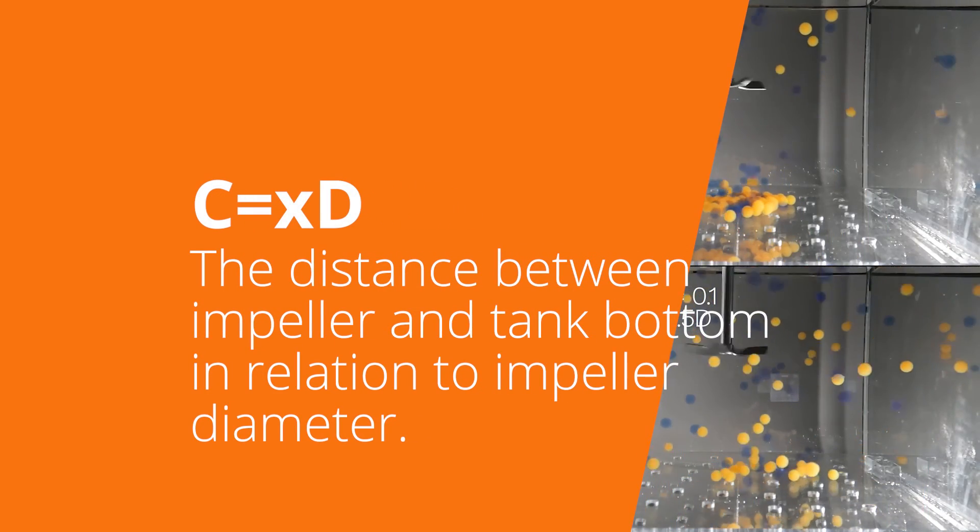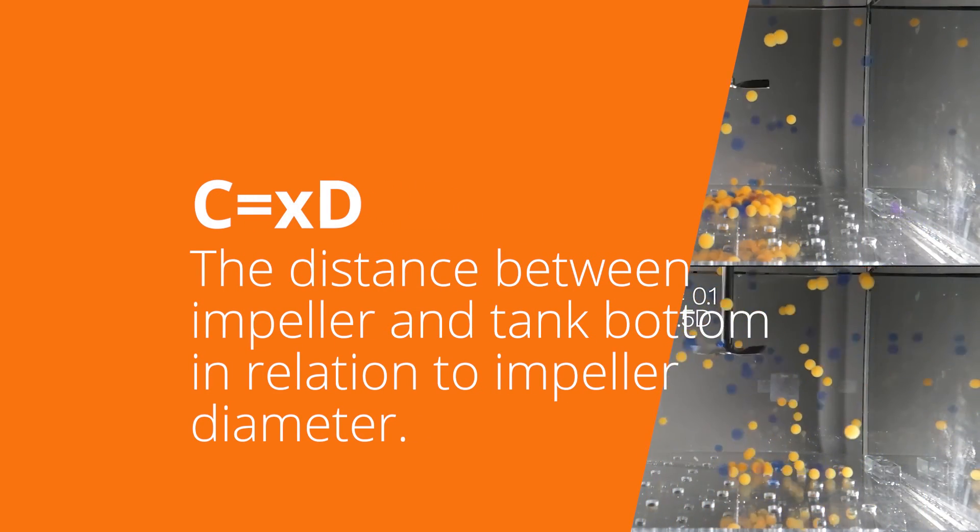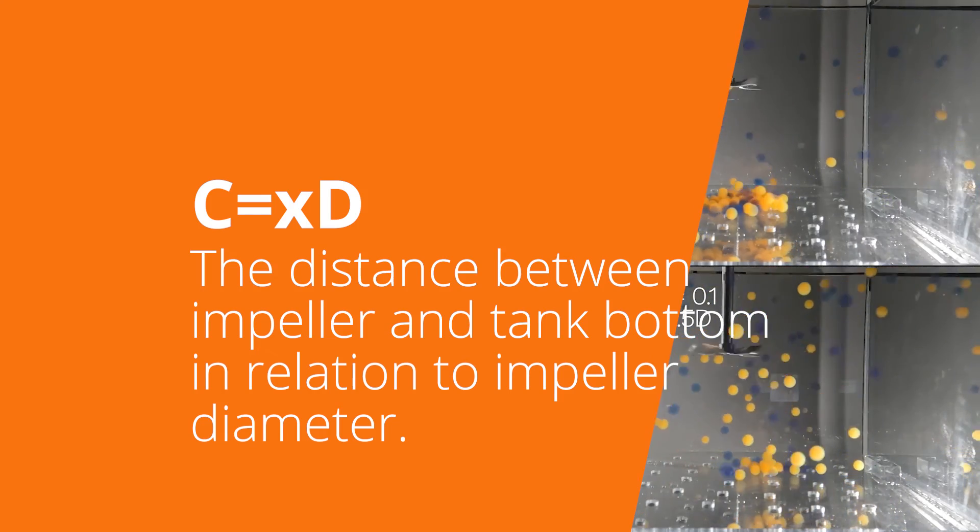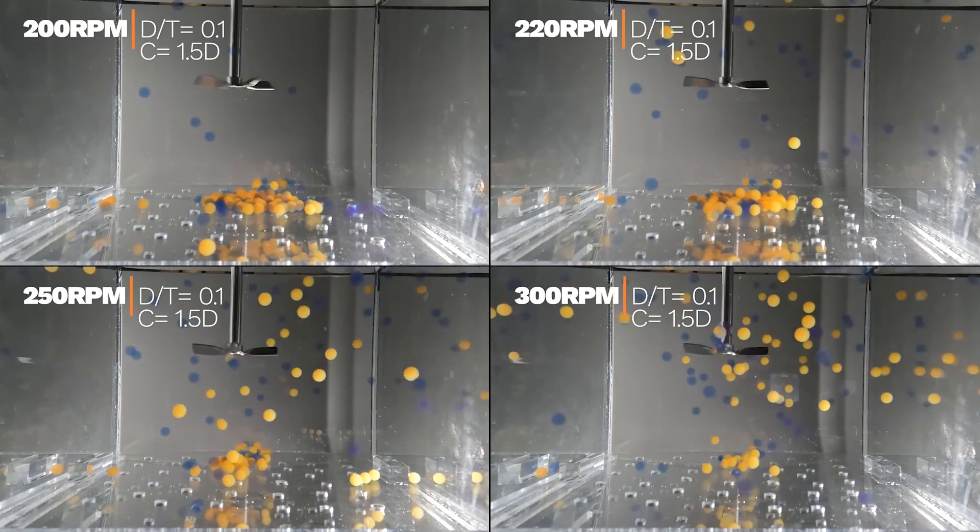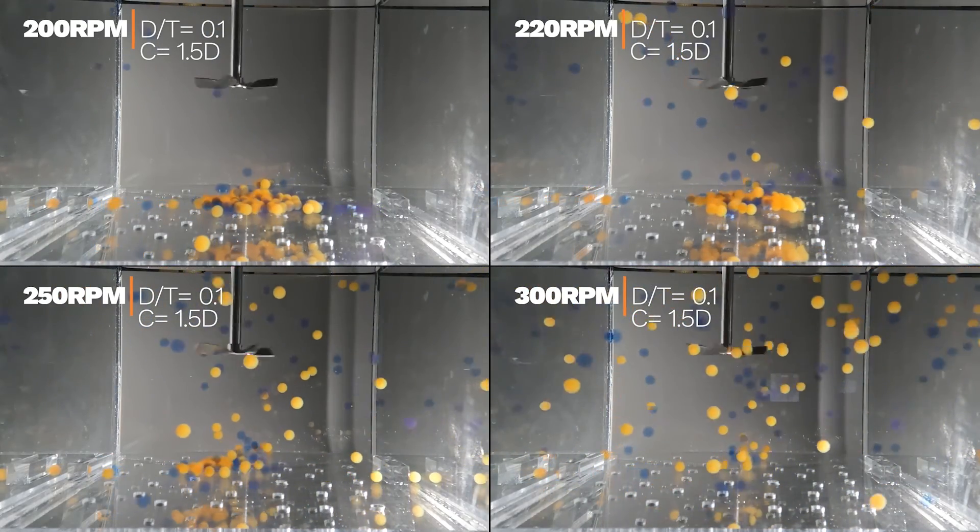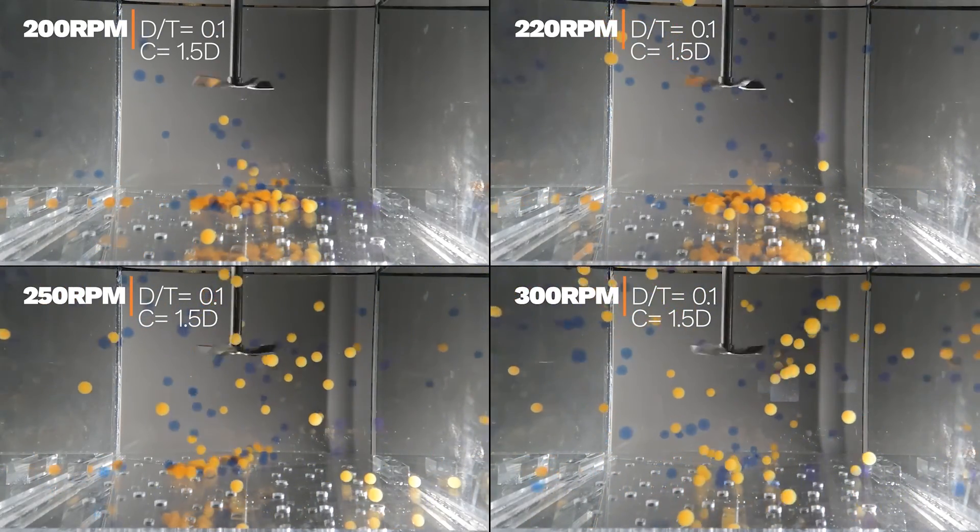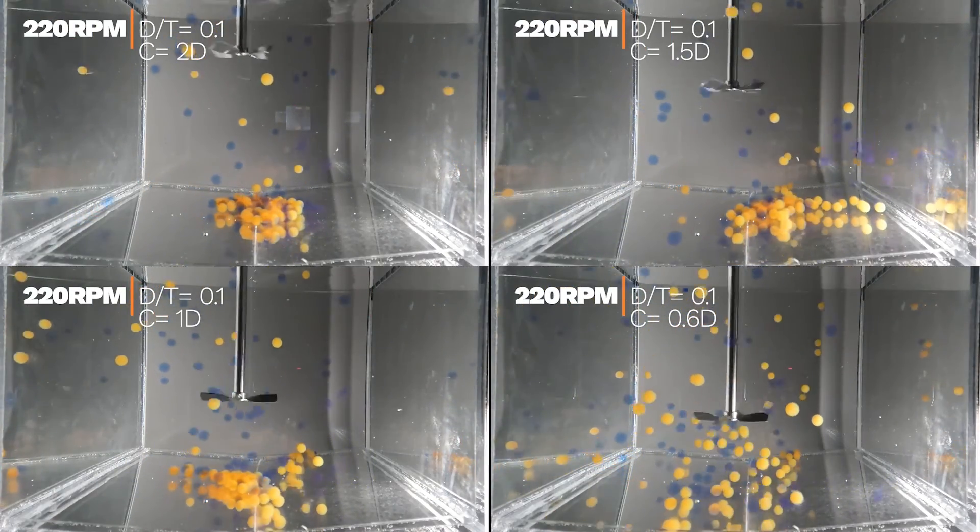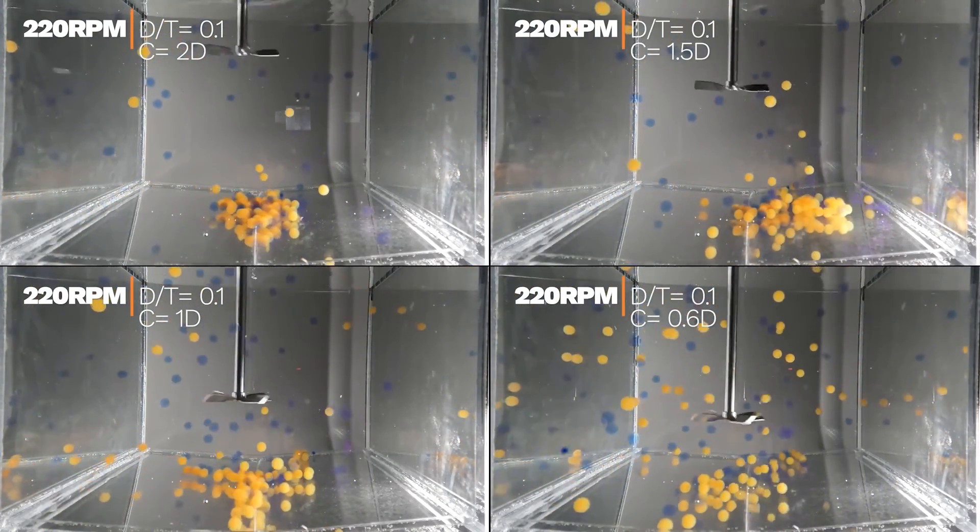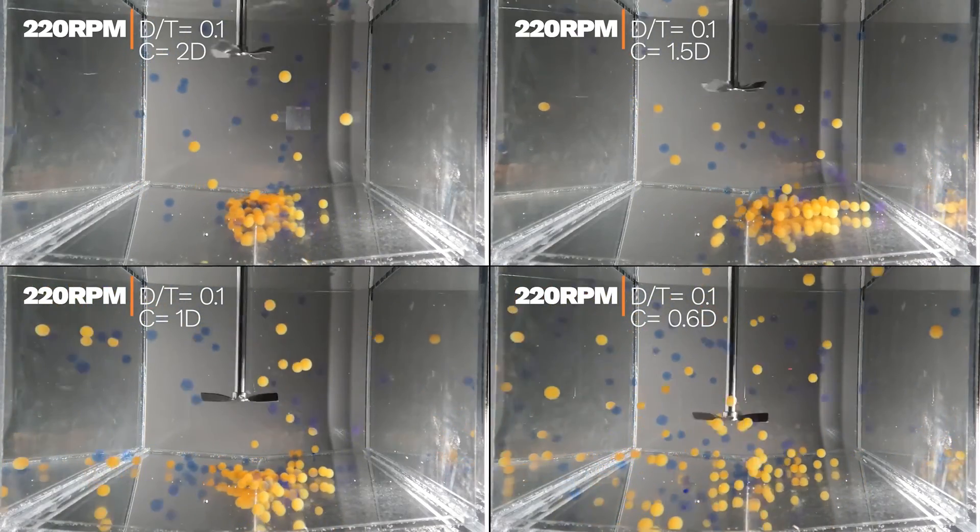The third is the diameter of the impeller and its relationship to the bottom of the tank, where we describe where the agitator is placed in relationship to its diameter from the bottom of the tank. The closer the agitator is to the bottom, the more likely it will pick up particles from the bottom.